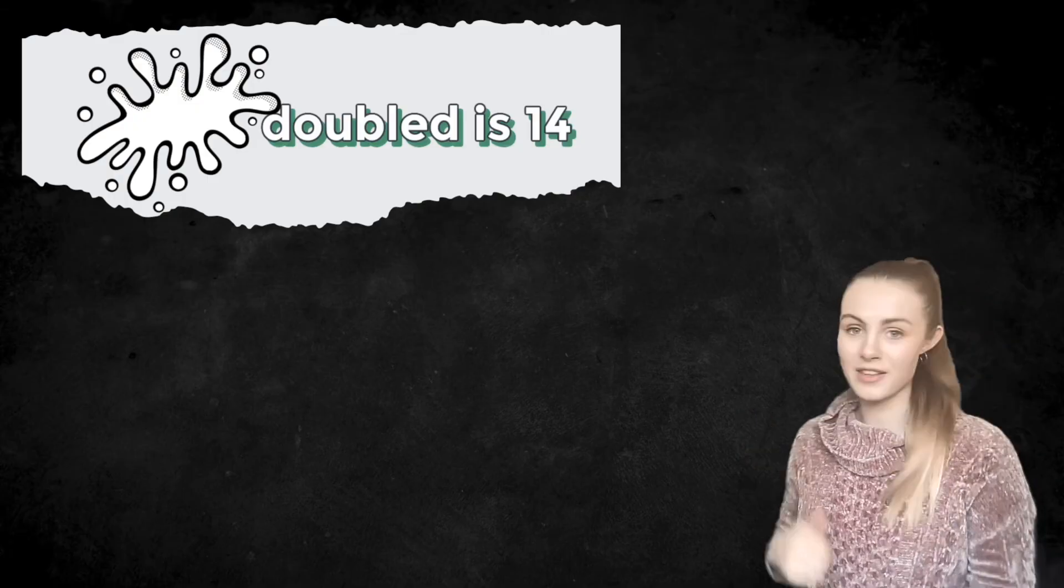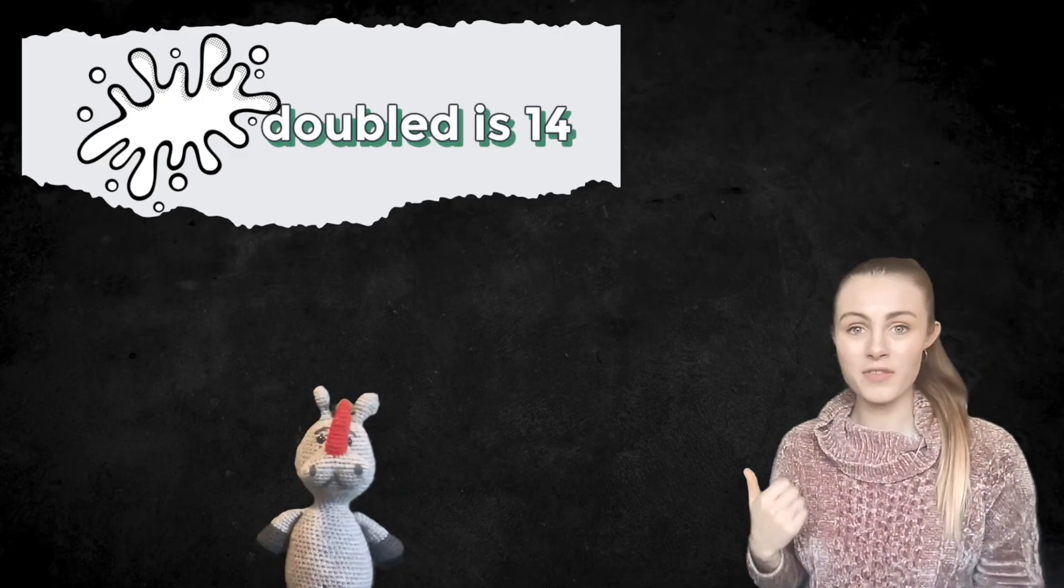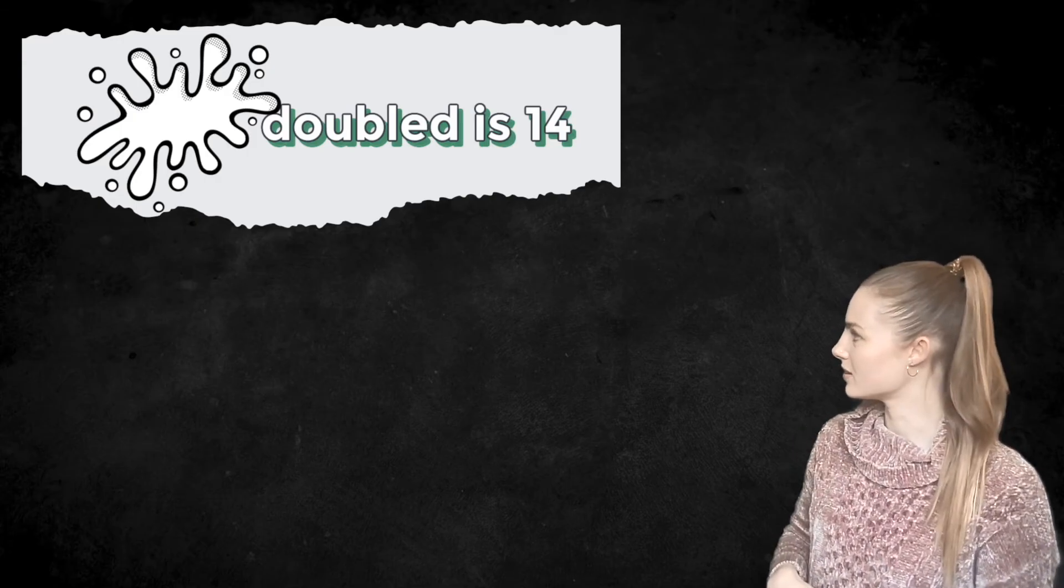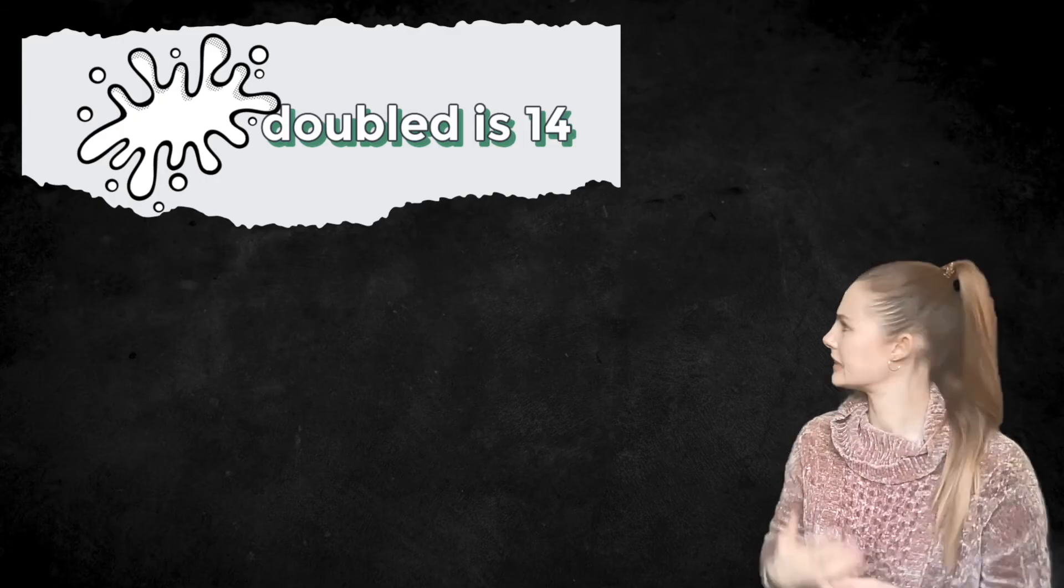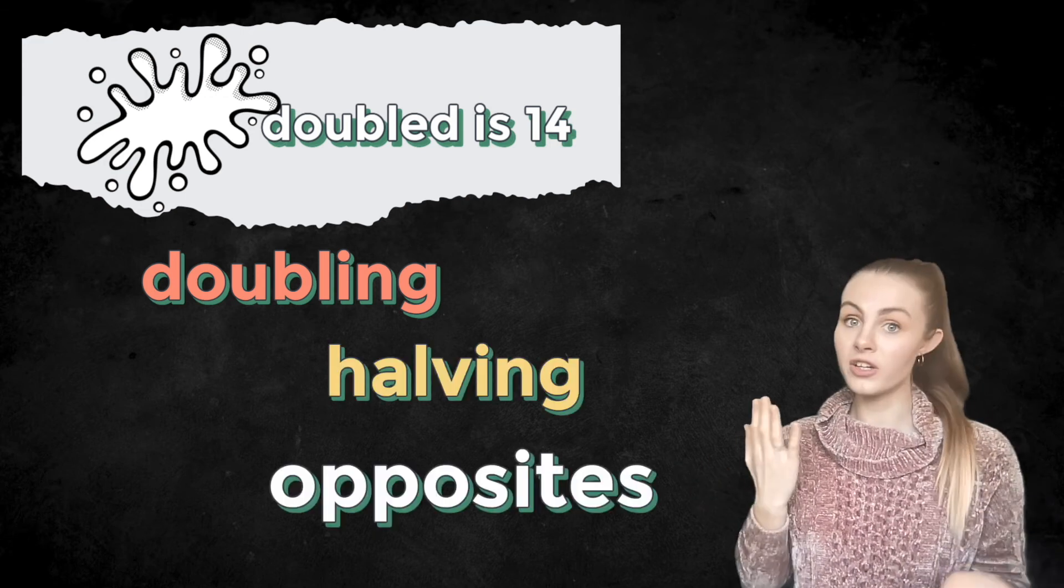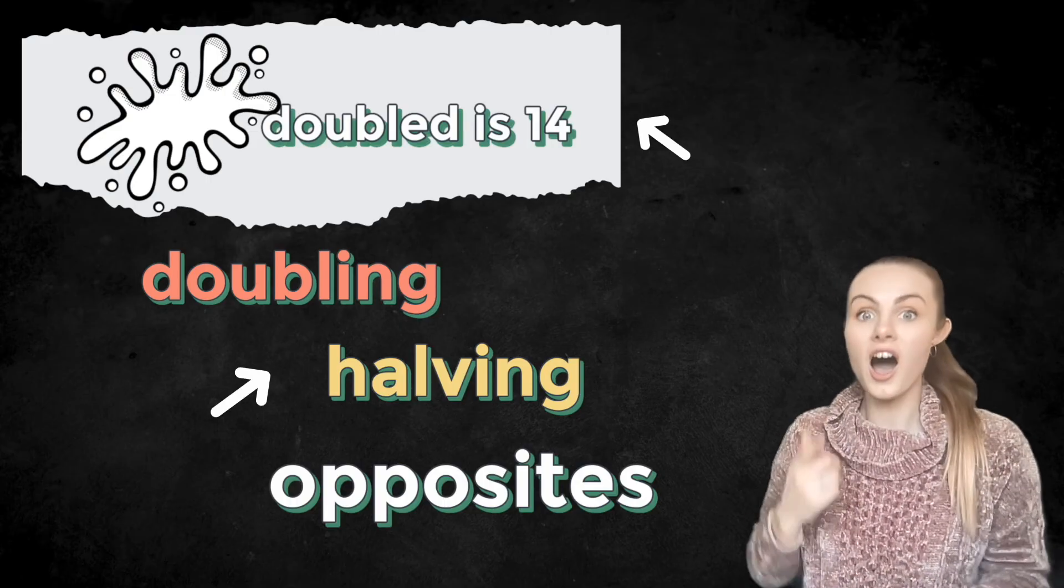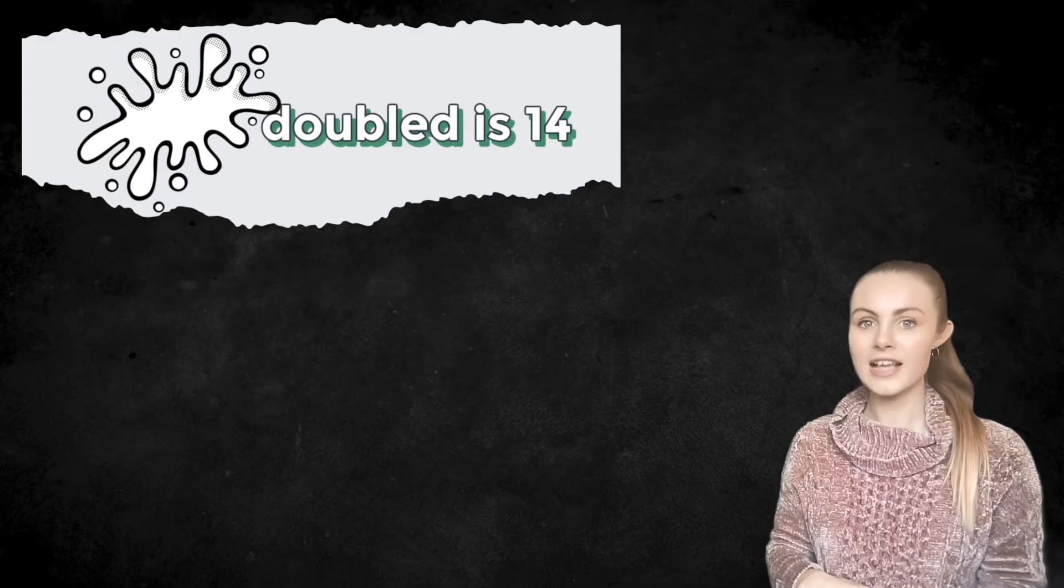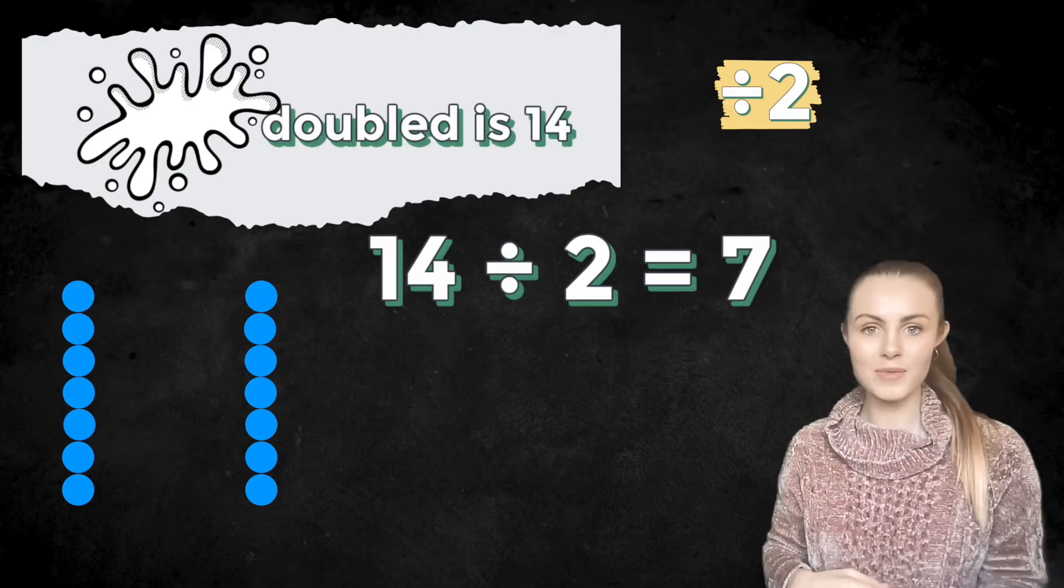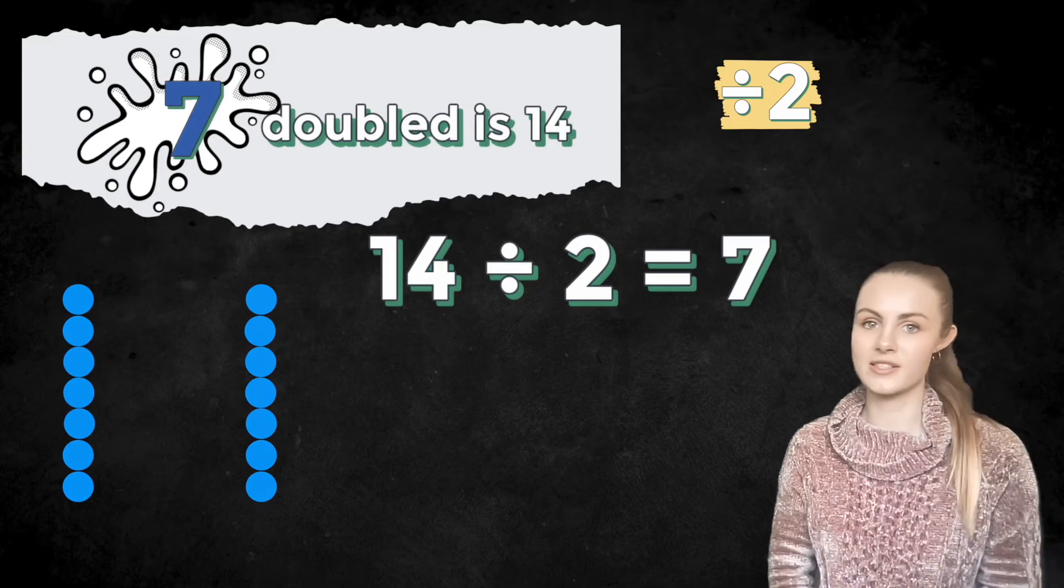I have here a piece of maths homework that one of my students gave me. Unfortunately, Pig spilled milk on it. So now we're missing part of the homework. So we're going to have to fill it in for them. It says something doubled is 14. How can we work this out? Well, luckily we know that doubling and halving are the opposites. One undoes the other. So in order to work this out, all we need to do is halve 14. So let's divide 14 by 2 because that's halving. 14 divided by 2 is 7. That must mean that 7 doubled is 14. Thank goodness we can save this piece of homework.